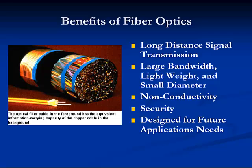The benefits of fiber optics compared to copper cable include: two strands of fiber, one for transmission and one for receiving, can typically carry 20,000 two-way voice conversations in the long-haul PSTN network — the equivalent of about 50,400 pair copper cable. Other features include long distance signal transmission, large bandwidth, light weight and small diameter, non-conductivity, security, and it's designed for future application needs.